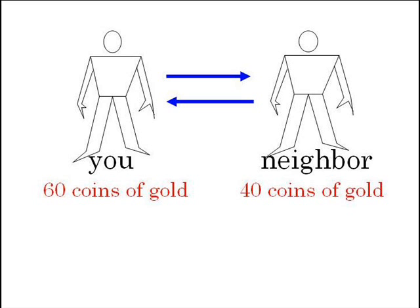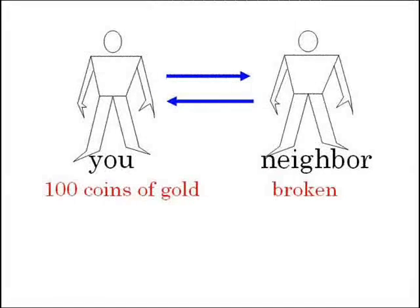Eventually, the economic system will collapse. Your neighbor will end up with no money and will stop buying from you. But since you have money, you may decide to continue buying from your neighbor without selling anything. In that case, your neighbor will refuse to sell to you, because that money would be useless to him. What is the point of having money if you cannot buy anything? Money exists only to facilitate the exchange of goods and services. If you have no goods and services to offer, your neighbor cannot give you any in exchange. It's a win-lose situation, also called a zero-sum game.